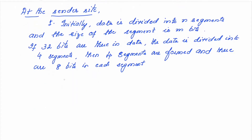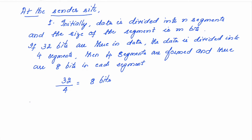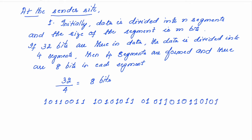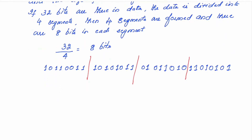The sender, if it has 32 bits of data that it wants to send to the receiver, each segment will have 8 bits. So you take 10110101, 10101010, 01011010, 01010101 — suppose if this is the data, it will divide into 4 segments. So it has divided the given 32 bits into 4 segments.